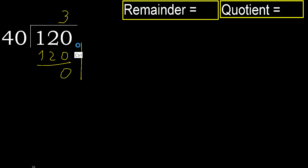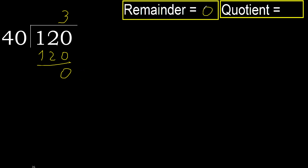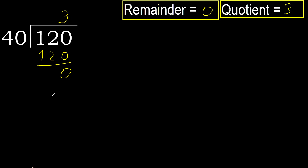That is not a number, therefore finish it. 0. Therefore, 120 divided by 40 is 3.